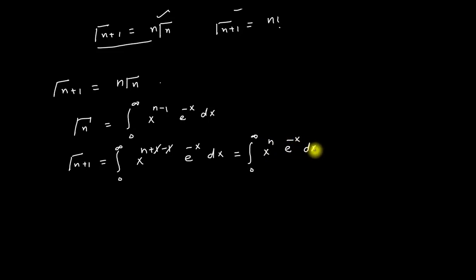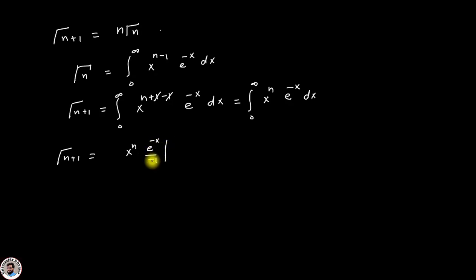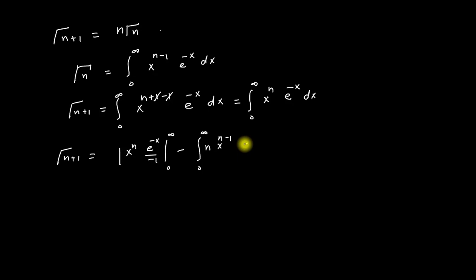Now I have to integrate this using integration by parts. This equation becomes: Gamma(n+1) equals x to the power n times e to the power (minus x) divided by (minus 1), with limits from zero to infinity, minus the integration from zero to infinity of n times x to the power (n minus 1) times e to the power (minus x) divided by (minus 1).